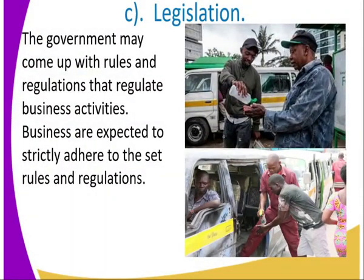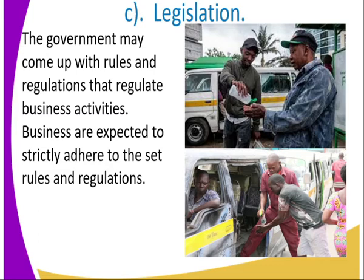Number three is regulation through rules. The government may come up with rules and regulations that regulate business activities. For example, during the COVID period, we have the sanitizing requirements for the transport sector. These are the rules set by the government, and businesses are expected to strictly adhere to them. The Matatu sector is supposed to adhere to the rules set by the Ministry of Health through the government.